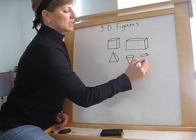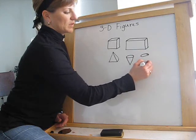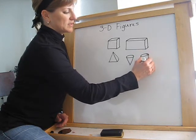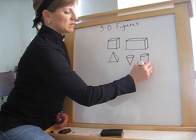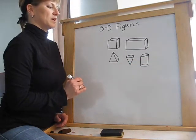Cylinder is two skinny ovals connected by two straight sides. And there you have some 3D figures.